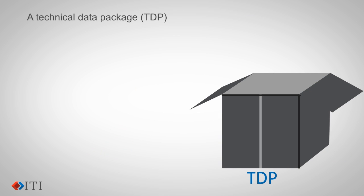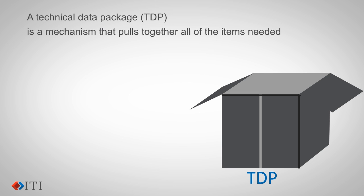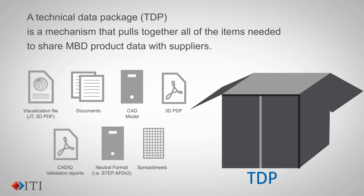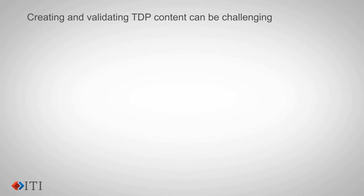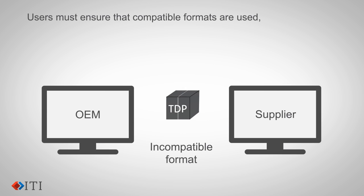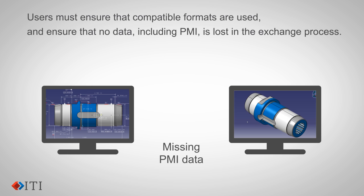A Technical Data Package, or TDP, is a mechanism that pulls together all of the items needed to share MBD product data with suppliers. TDPs typically include a native CAD file, a neutral CAD file, and a visualization file. All of these include product manufacturing information, or PMI. Users must ensure that compatible formats are used, and ensure that no data, including PMI, is lost in the exchange process.